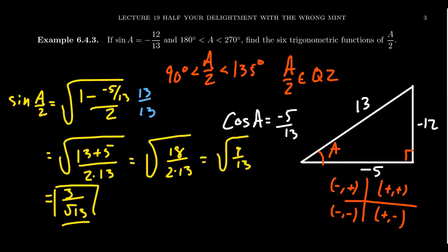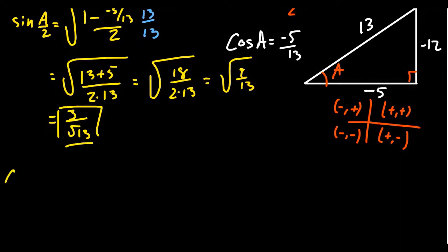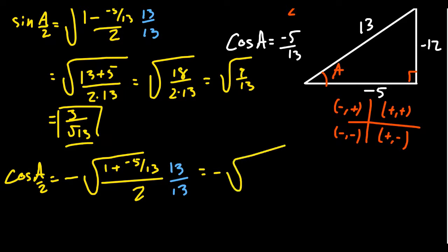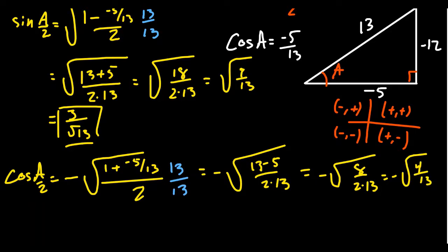For cosine of a/2, since a/2 is in the second quadrant, cosine is negative. Using the identity: negative square root of (1 plus cosine a) over 2, with cosine a equals negative 5/13. We get negative square root of (1 plus (negative 5/13)) over 2. Multiplying top and bottom by 13: negative square root of (13 minus 5) over 26, which is negative square root of 8/26. Simplifying 8/26 to 4/13: since 4 is a perfect square, cosine of a/2 equals negative 2 over the square root of 13.